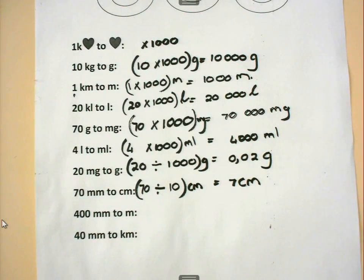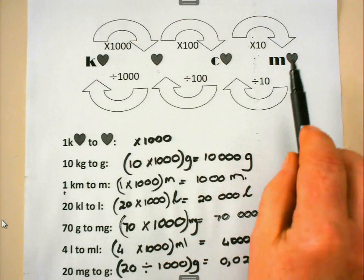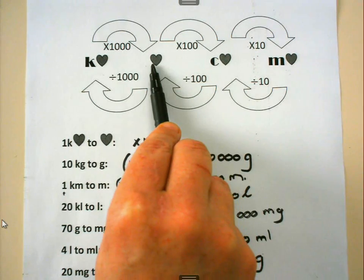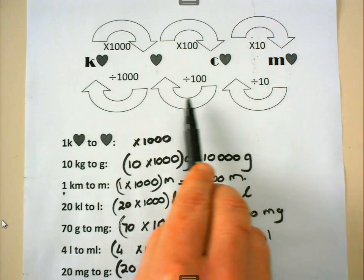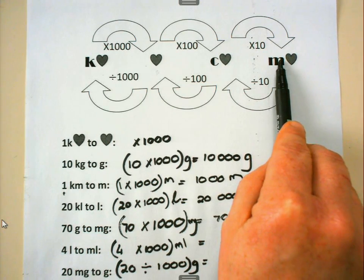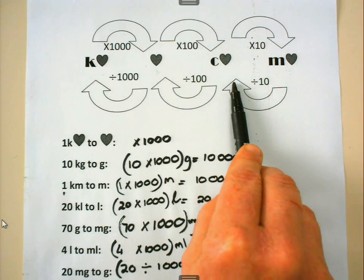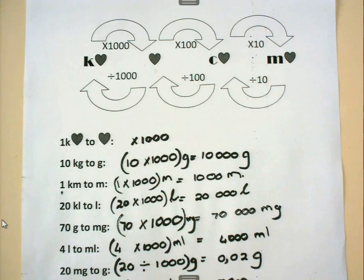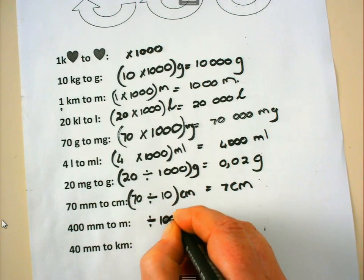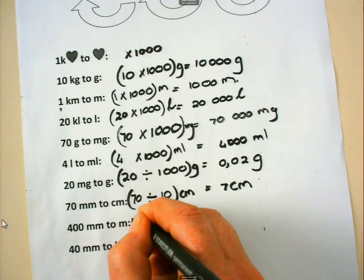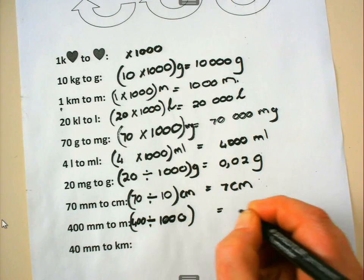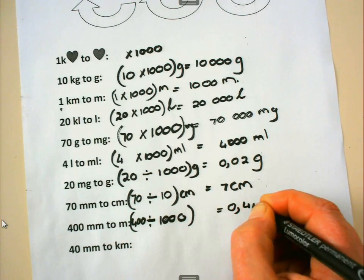400 millimeter to meter. My base unit is meter, so millimeter is on the small end. Moving from millimeter back to meter means dividing — I divide by 10 and another 100, which equals dividing by 1000 total. So 400 millimeter divided by 1000 equals 0.4 meter.